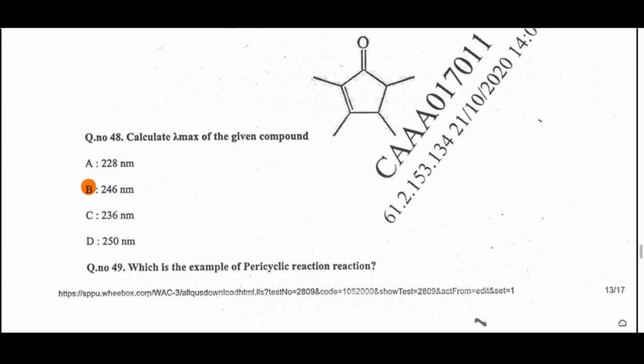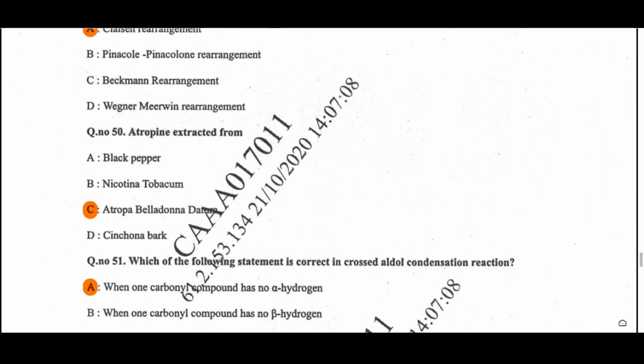Question 49: Which is an example of a pericyclic reaction? The Claisen rearrangement is the example of a pericyclic reaction — option A. Question 50: Atropine is extracted from Atropa belladonna — that is the source of the atropine alkaloid.